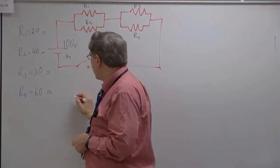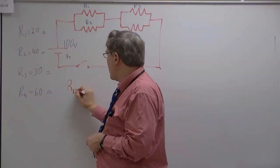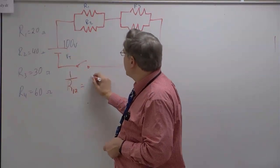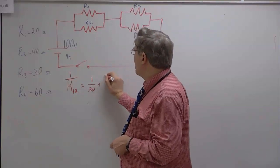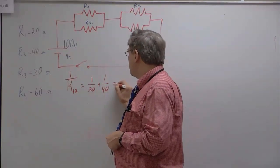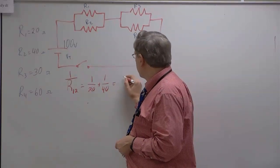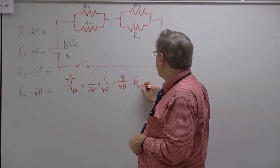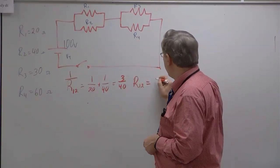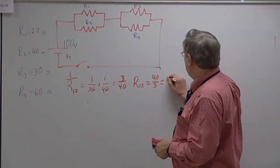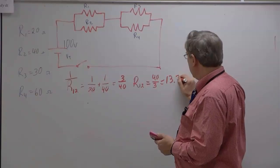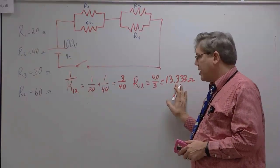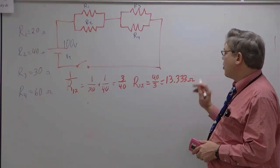To solve for the parallel circuit, which I'll just call R1,2, that's going to be equal to, well, 1 over that is going to be equal to 1 over 20 ohms plus 1 over 40 ohms. So the total of that is going to be 3 over 40 ohms. So R1,2 is going to be equal to 40 over 3, 13.333. Call it that, ohms. I'm going to leave that long number there before I round.